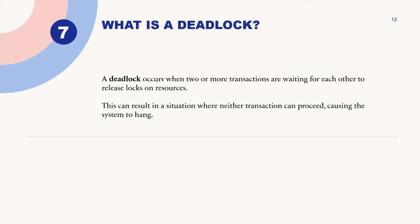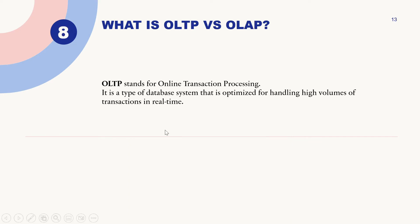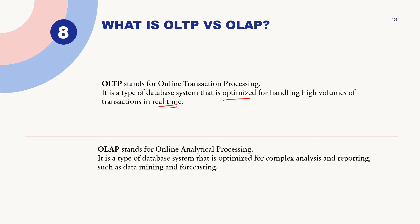What is a deadlock? Deadlock occurs when two or more transactions are waiting for each other to release locks on resources. What is OLTP versus OLAP? OLTP stands for Online Transaction Processing. It is a type of database that is optimized for handling high volume transactions in real time. OLAP stands for Online Analytical Processing. It is a type of database system optimized for complex analysis and reporting such as data mining and forecasting.